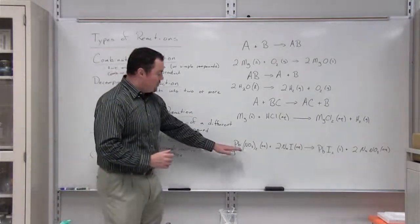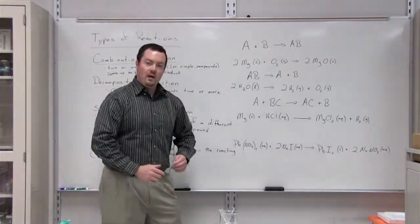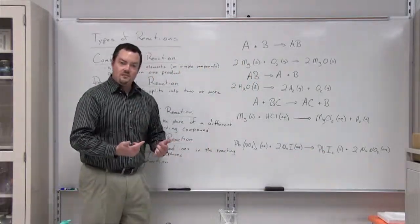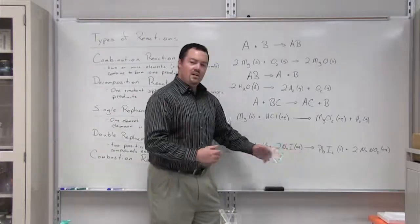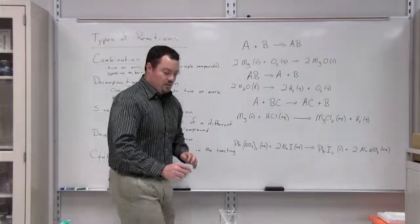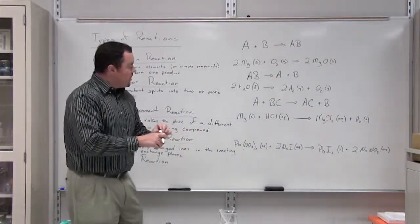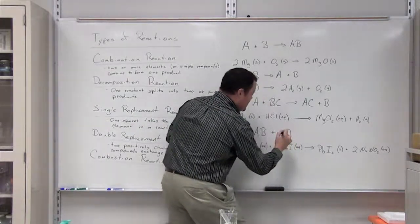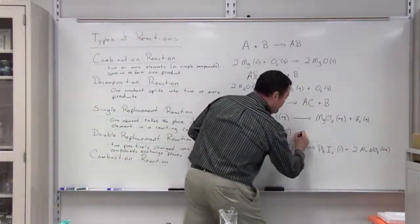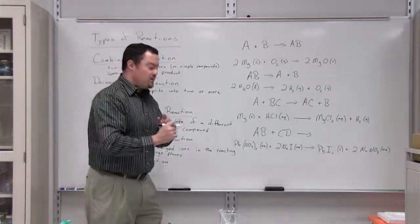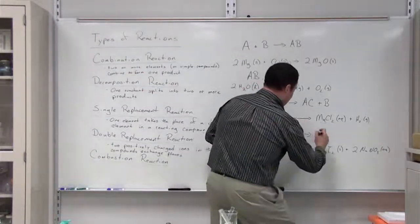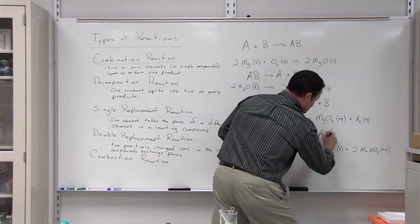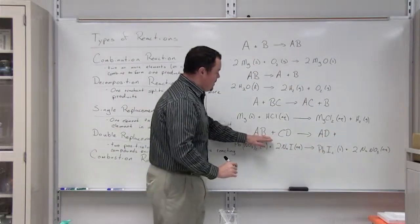In chemistry, positively charged ions come from metals, which are found on the left side of the periodic table. Lead and sodium are both metals, so these are the positively charged ions. The lead and the sodium switch places — they take on each other's negatively charged ion. The generic formula for a double replacement reaction is AB plus CD, where the two positively charged ions switch places to form AD and BC.